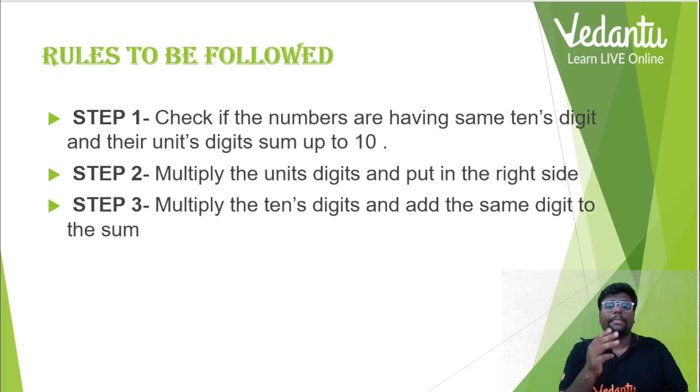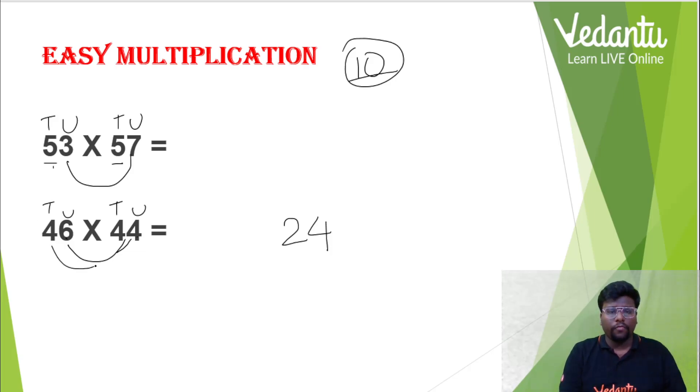Let's get to the third step. Third step says, multiply the tens digit and add the same digit to the sum. Okay? Let's go. 4 4s are 16 and 16 plus 4 is 20. So, it is 20. Is it the answer, guys? Yes, it is.